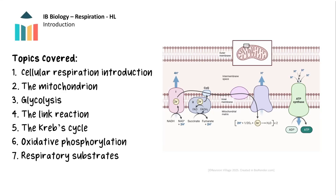In this key concept video we're going to go through the stages of cellular respiration for the higher level IB biology. This video follows on from the standard level respiration video which covers the core syllabus. We will start with what the stages of aerobic respiration are, then remind ourselves about the structure of the mitochondrion, before jumping into the detail of the stages beginning with glycolysis, then the link reaction, the Krebs cycle, oxidative phosphorylation, and finishing with a little bit about respiratory substrates. So let's get started.